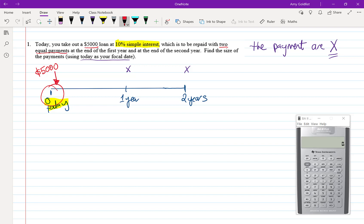$5,000 is a loan. It came into my account. Well, those payments are leaving my account. It doesn't matter which way you decide to draw your arrows, as long as you're consistent.